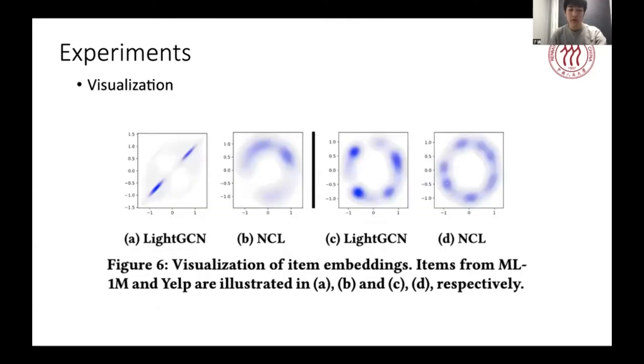Finally, we plot the distribution of learned item embeddings with KDE in two-dimensional space. Compared with LightGCN, those representations learned by NCL clearly exhibit a more uniform distribution, which have a better capacity to model the diverse user preference or item characteristics.